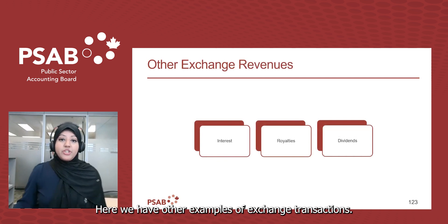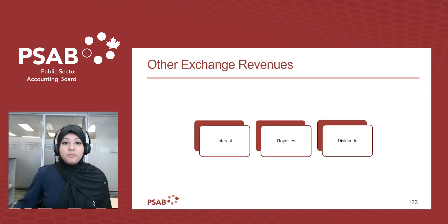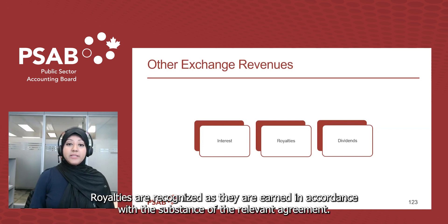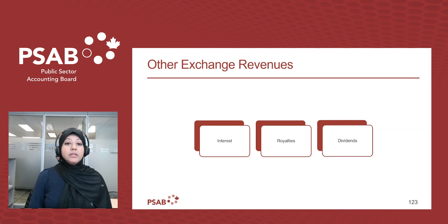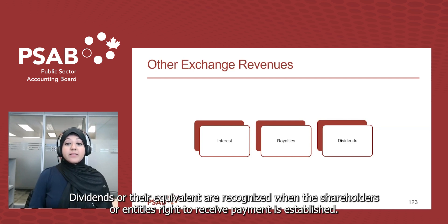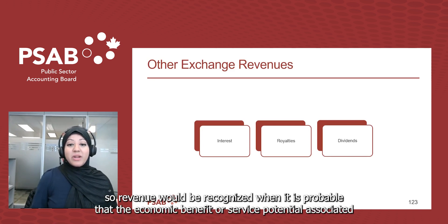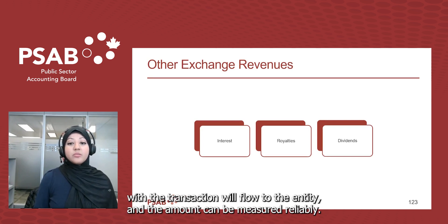For other exchange transactions: interest is recognized on a time proportion basis that takes into account the effective yield on the asset; royalties are recognized as they are earned in accordance with the substance of the relevant agreement; and dividends are recognized when the shareholder's or entity's right to receive payment is established. The general recognition criteria also apply — revenue is recognized when it is probable that the economic benefit or service potential will flow to the entity and the amount can be measured reliably.